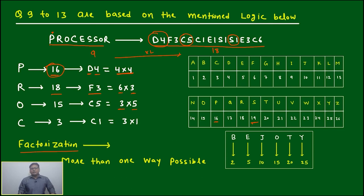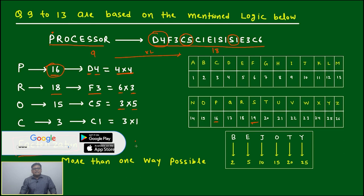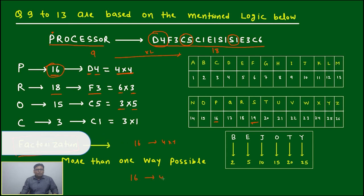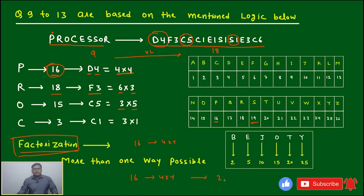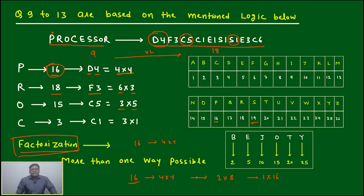If you are good in quant or mathematically sound, you will immediately find it is using the factorization method — factorizing the positional value of the alphabet. If P is 16, they factorize 16 into 4 into 4. Now your mind may ask: why only 4 into 4? Why not 2 into 8? Yes, that can be. Why not 1 into 16? That can also be. So one code can be represented in multiple ways.